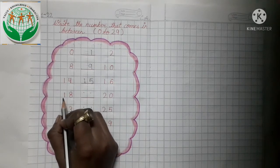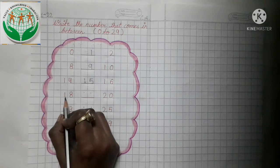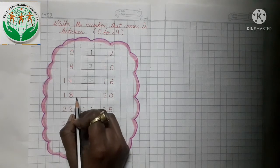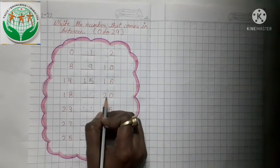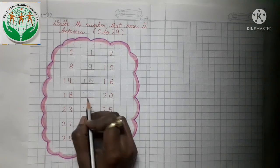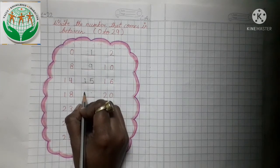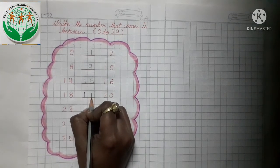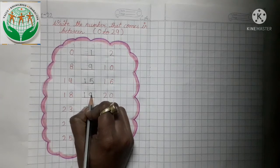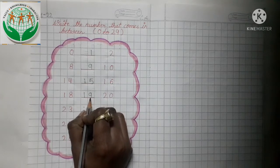This is number 18. Now tell me what comes in between 18 and 20 — 18 and 20 ke bich mein kya aega? Yes, number 19. So we write here number 19.